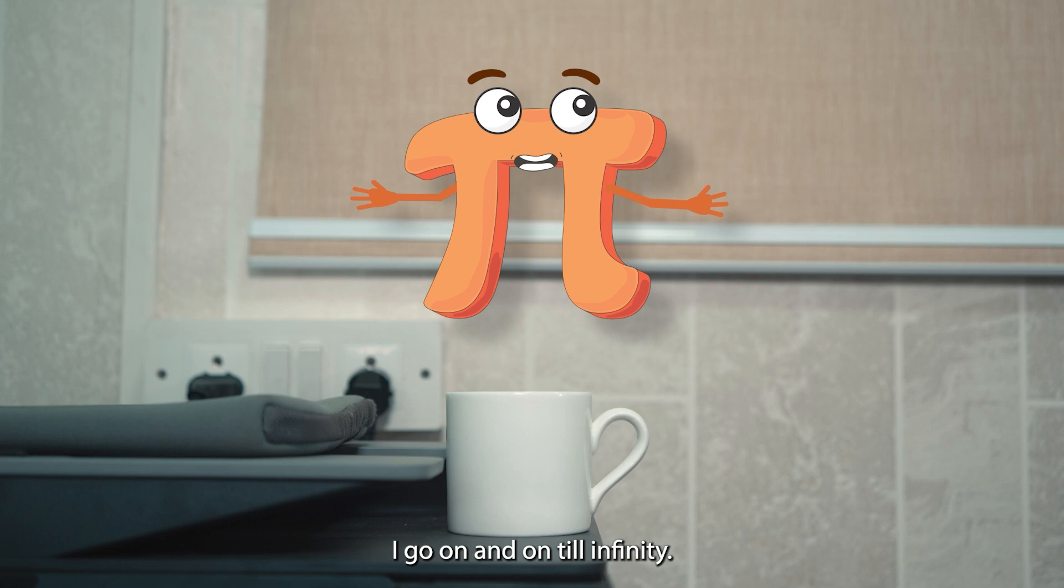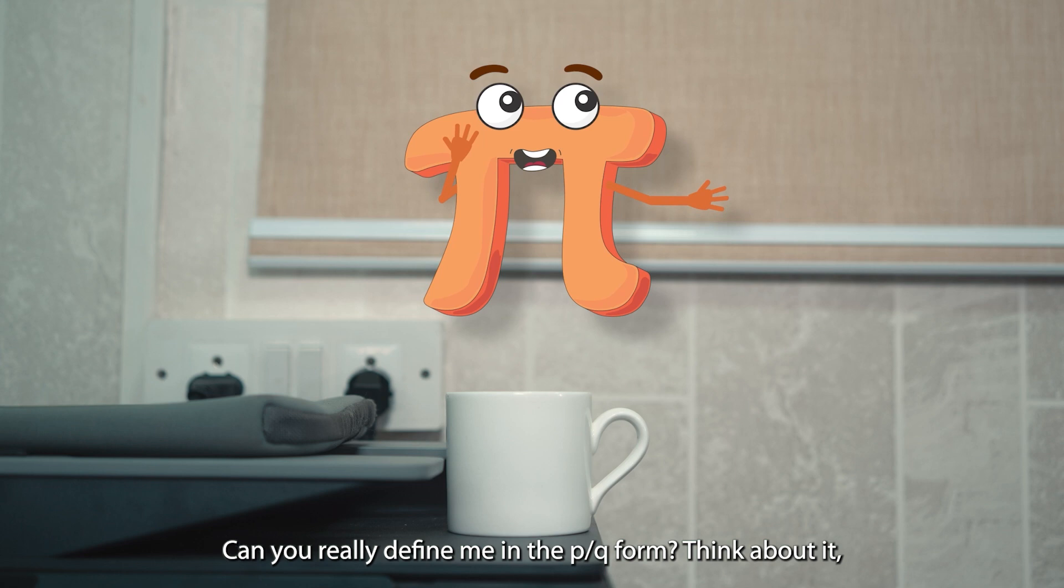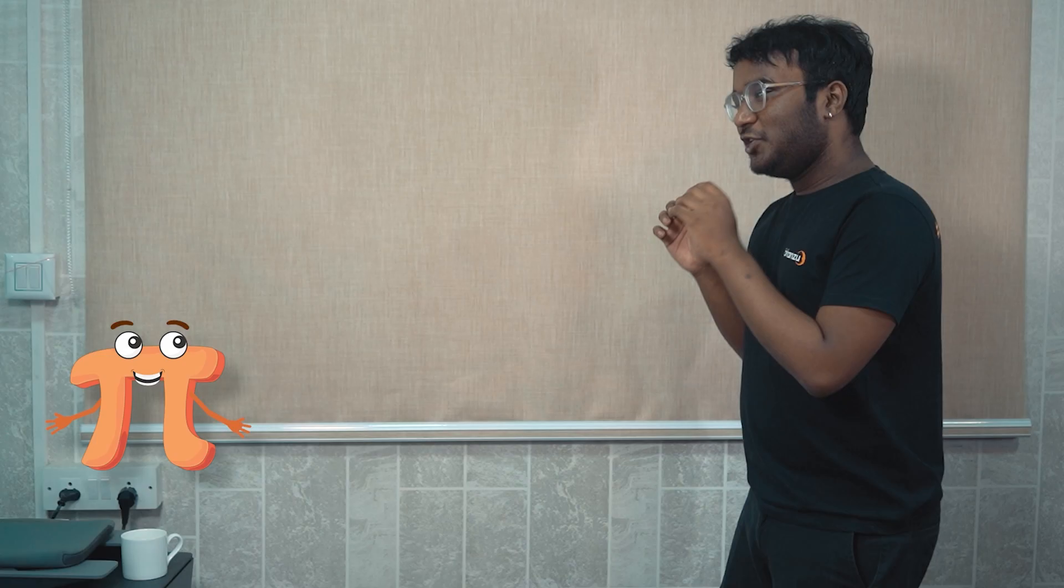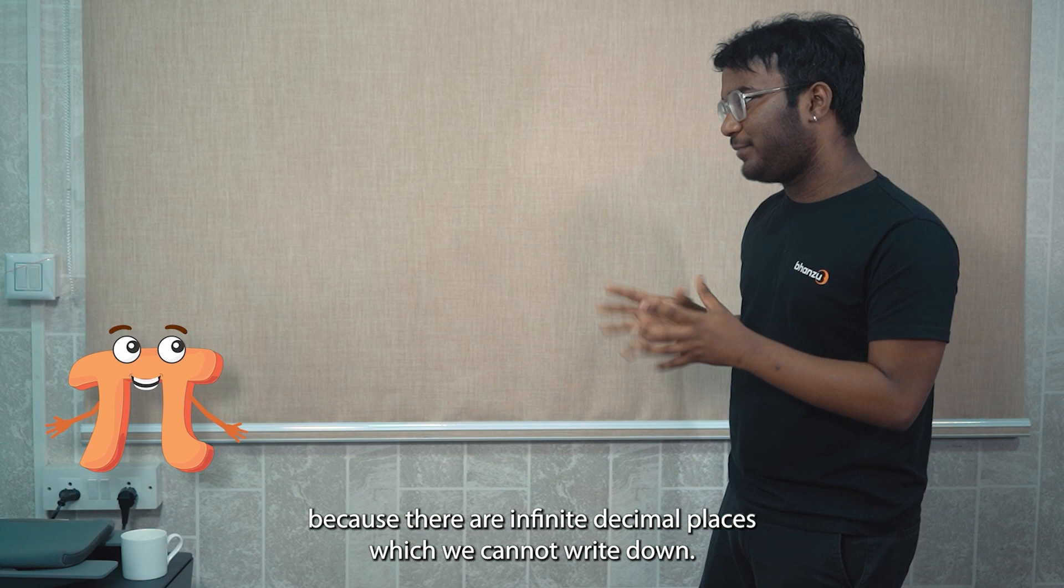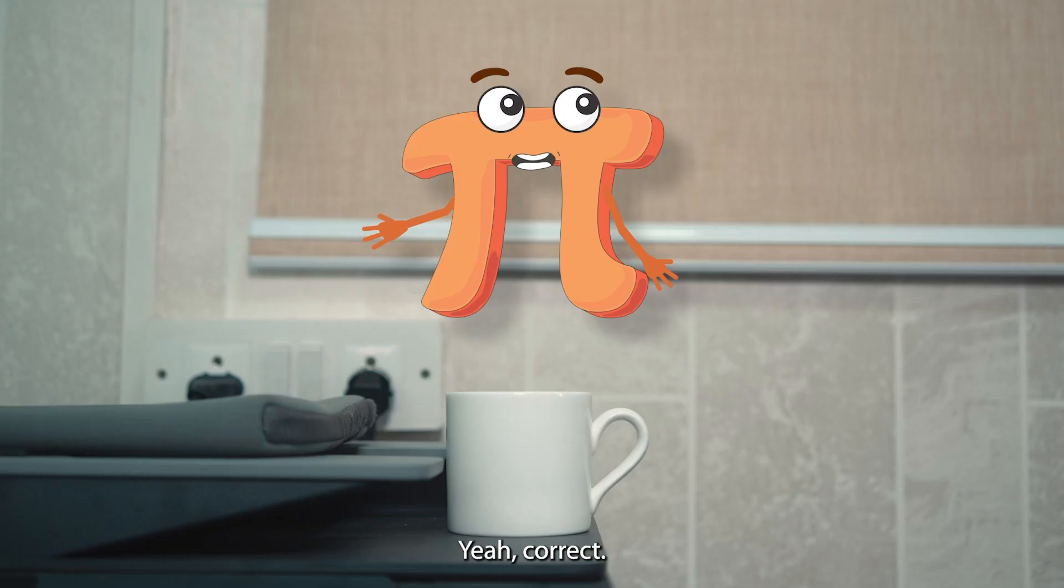Think about it and you tell me if I am rational or irrational. You have a non-recurring, non-repeating decimal expansion. We use a specific symbol of pi for you because there are infinite decimal places which we cannot write down. So on the outside, you might seem like a rational number, but you are an irrational number.